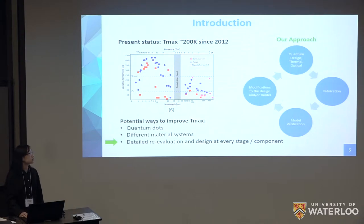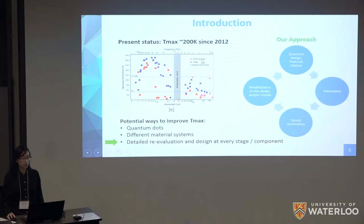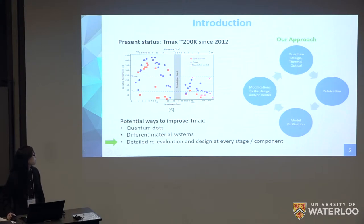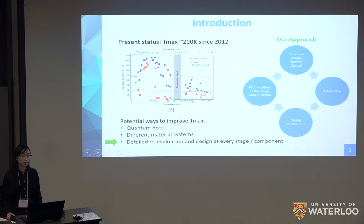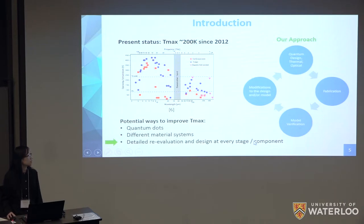The main research goal in this field is to improve the operating temperature. As seen in this diagram, for the terahertz range we're interested in, T-max is around 200 K in pulse mode, achieved in 2012 and not improved since. If we can improve T-max by 30 K, it would be sufficient for use with thermoelectric coolers, opening more application doors. We chose to stay with the AlGaAs material system as it is the most mature for fabrication, while doing a detailed re-evaluation of every design component.